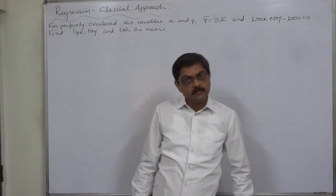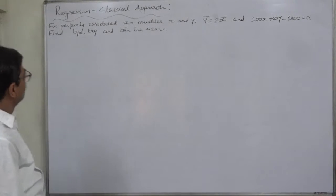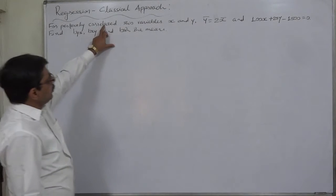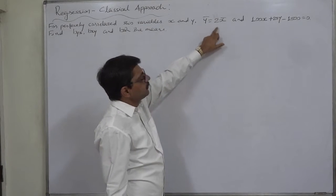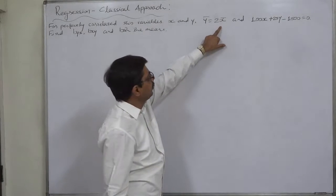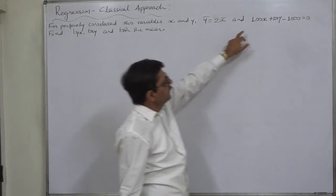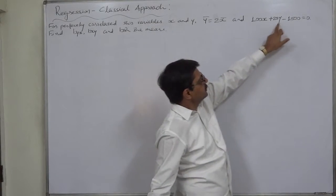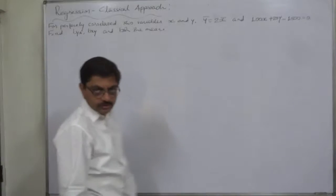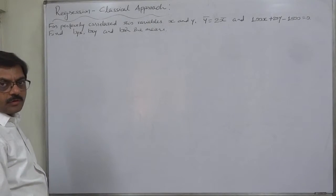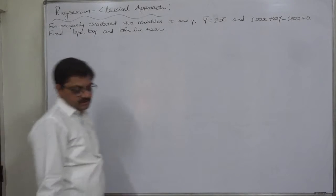Hello, Namaskar. One more small problem in regression. For perfectly correlated two variables x and y, y̅ equals 2x̅, meaning the mean of y is twice the mean of x, and 100x plus 25y minus 1500 equals 0 is one of the equations of the line of regression. Find byx, bxy, and both the means.